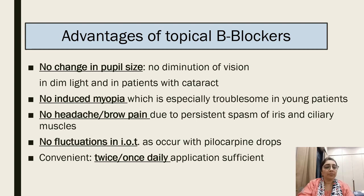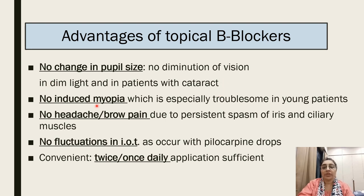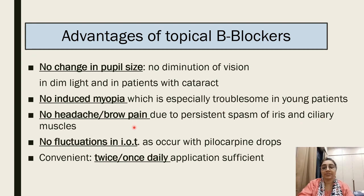Advantages of topical beta blockers are: no change in pupillary size so no dimming of vision in dim light; unlike pilocarpine or physostigmine, no induced myopia which is especially troublesome in younger patients; no headache due to persistent spasm of iris and ciliary muscle; no fluctuation of intraocular pressure as occurs with pilocarpine drops; and convenient once or twice daily application is sufficient.